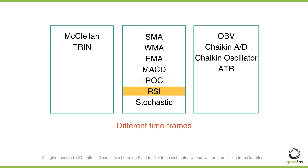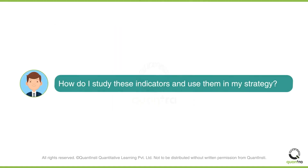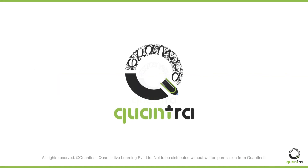You can also analyze or calculate technical indicators on different time frames — for example, what RSI is telling you over the last four hours versus over the last 14 days. So how do you study these indicators and use them in your trading strategy? The Quantra course on Technical Indicators Strategies in Python helps you do just that.